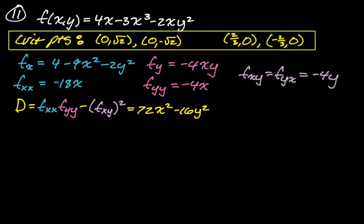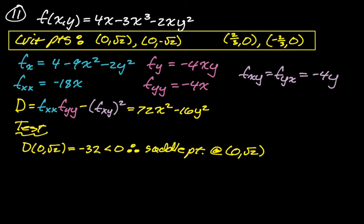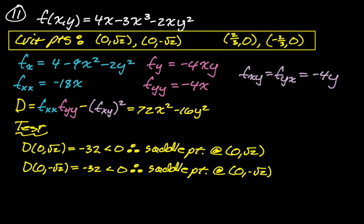Testing (0, √2): D = 72(0) - 16(2) = -32, which is less than 0 — so this is a saddle point. Testing (0, -√2): D also equals -32, which is less than 0 — another saddle point.